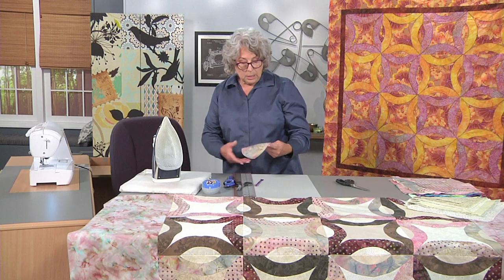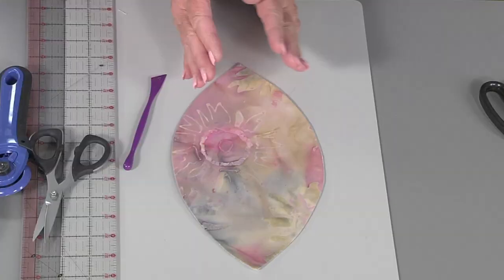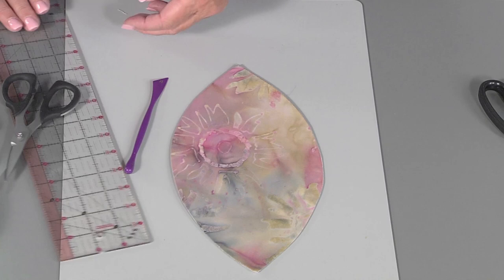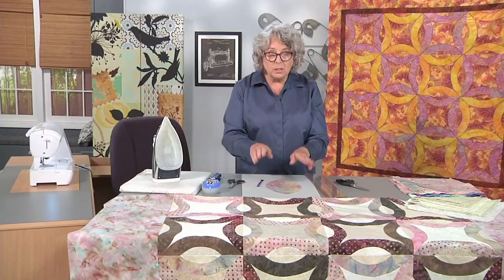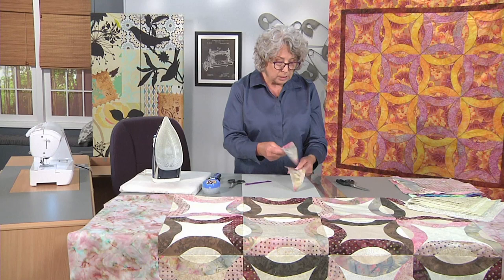So when we're all finished pressing, we're going to have a giant football that looks about like that. We're going to cut this in half with our rotary cutter, point to point. We're going to do that with every single one that you've done, depending on how many blocks you've made.